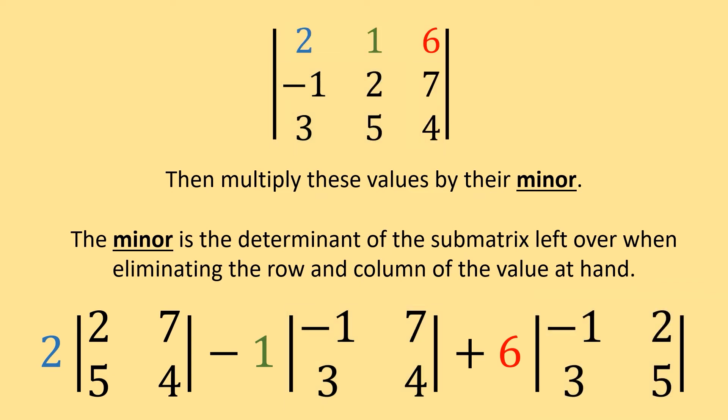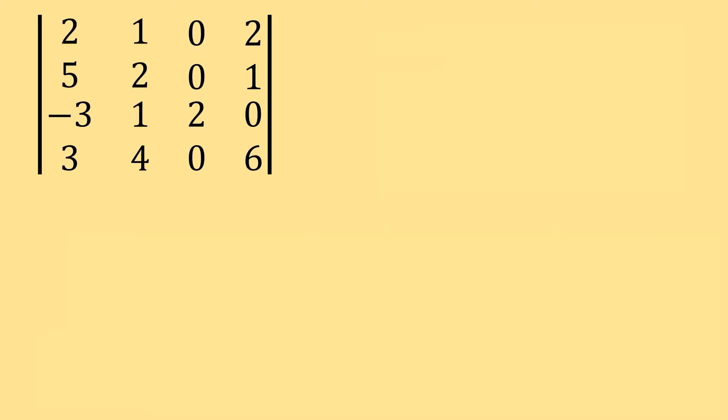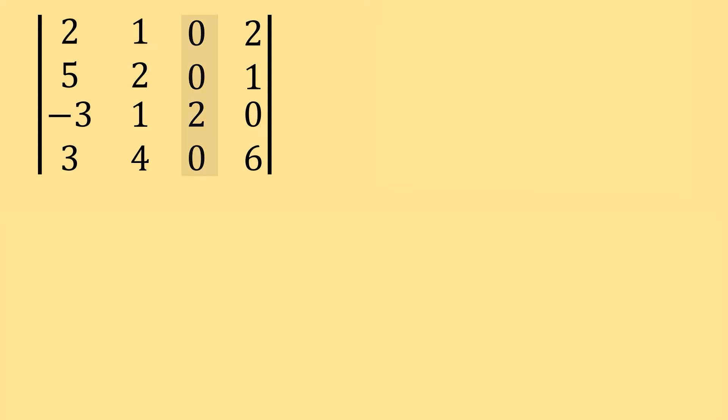Let's work with a bigger matrix — this 4x4 matrix. We're told to find its determinant. We first want to identify a row or column to calculate the determinant with. Do you see any row or column that has a bunch of zeros? It looks like this third column has three zeros and one value — let's work with that. So we bring these values down: 0, 0, 2, and 0.